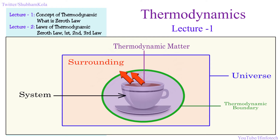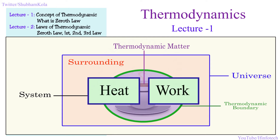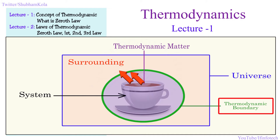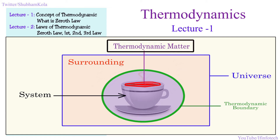We do energy transformation between system and surrounding. There are two forms of energy — heat and work — which are boundary phenomena; they are observed only on the boundary. If you give heat to the system, something happens with the thermodynamic matter, and this heat and work eventually change the energy of the system.